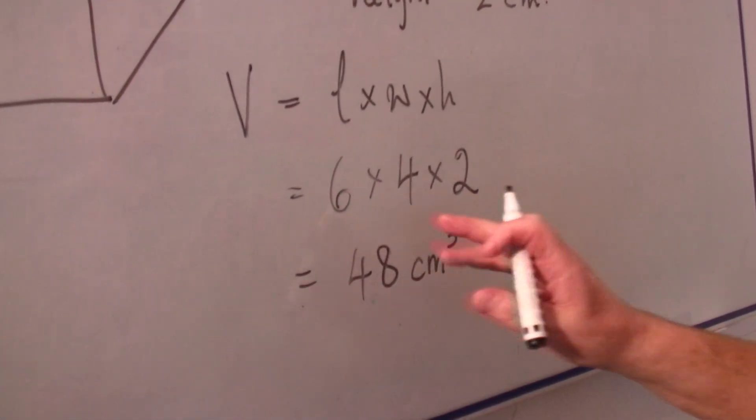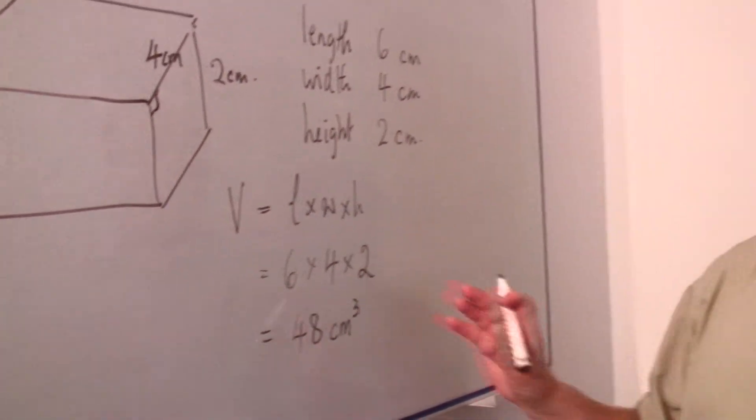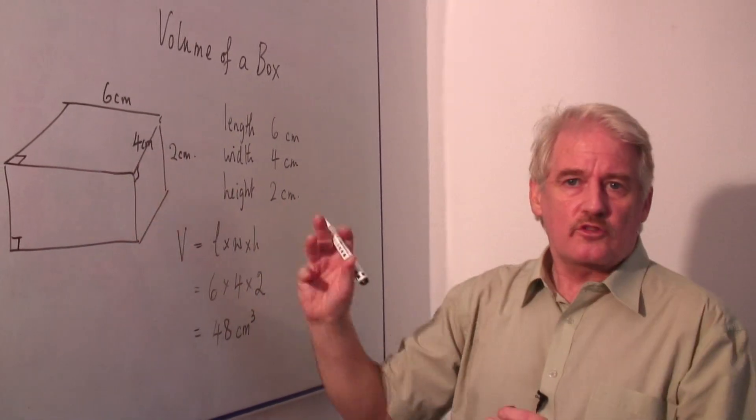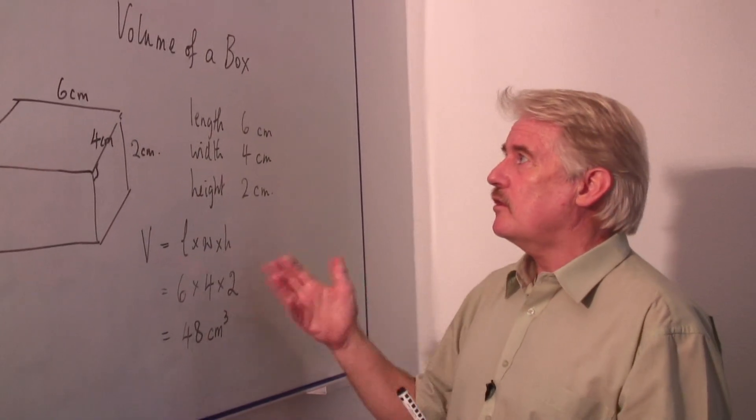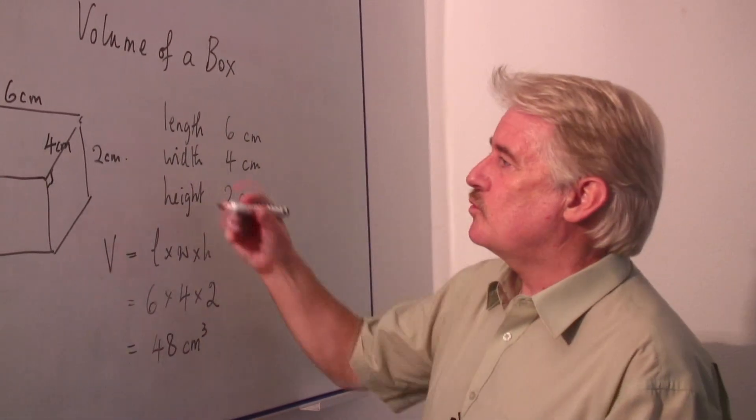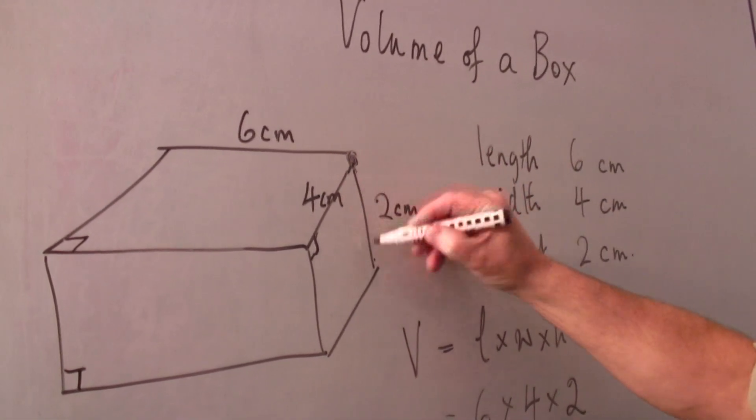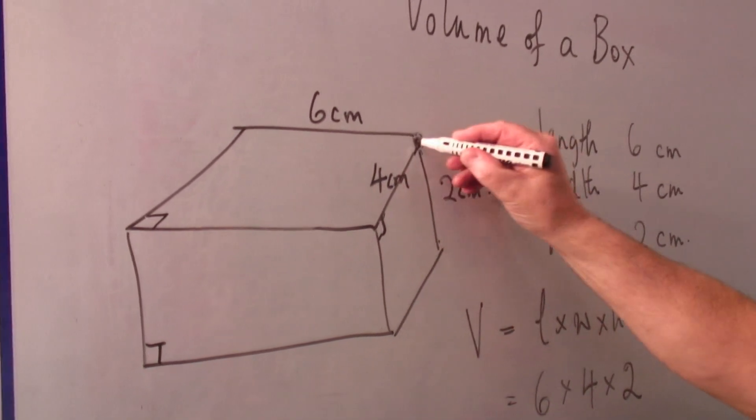The important thing to remember about such an object as this, this is a general box, and of course a cube is a sort of box as well. So that is just a general case. But if you want to find the volume of a box, find one corner, and the three distances are on the three edges which come to that corner.